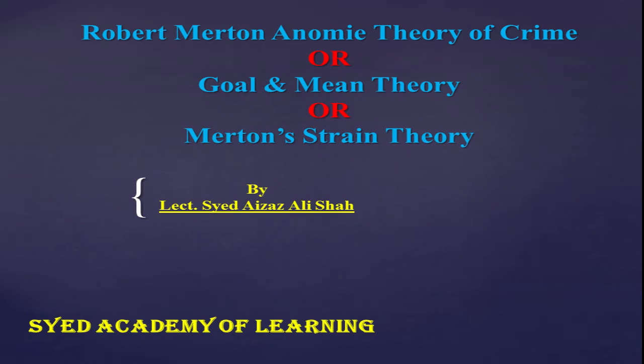Hello everyone and welcome to Seedy Academy of Learning. Today we will talk about an important lecture which belongs to the sociological theories of criminal behavior. This theory is Robert Merton's Anomie theory of crime, which is also called the goal and mean theory as well as Merton's strain theory. Whether it appears in criminology papers or CSA's criminology paper, you have to write the same theory.